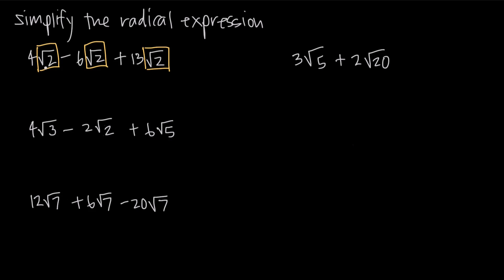We could say we have 4 orange boxes, take away 6 orange boxes, then add back 13 orange boxes — how many do we have? Don't get confused by the fact that these are square roots; just identify which ones are the same and combine like terms. 4 minus 6 gives negative 2, and negative 2 plus 13 is positive 11. So our final answer is 11 square root of 2.